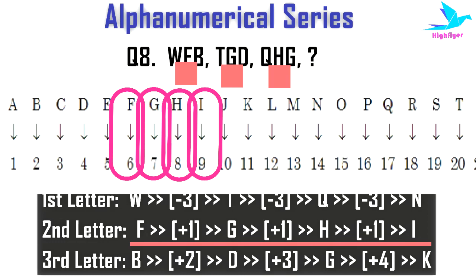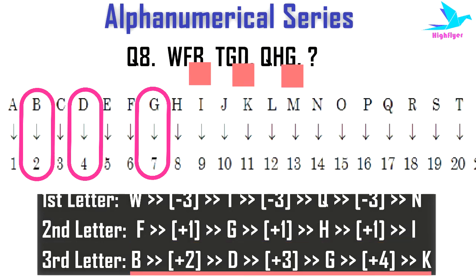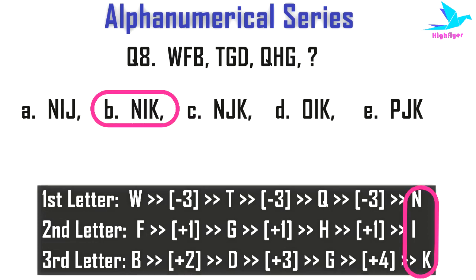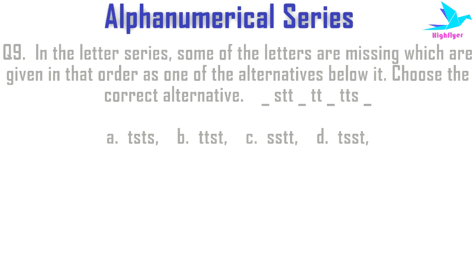For the third letters B, D, G — B + 2 = D, then D + 3 = G, then G + 4 = K. So the required alphanumerical term is N I K.